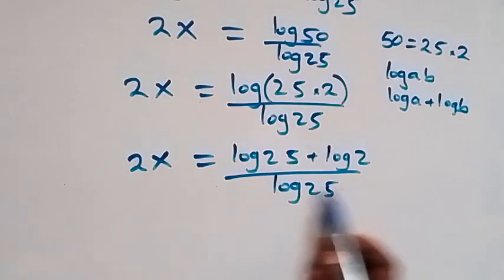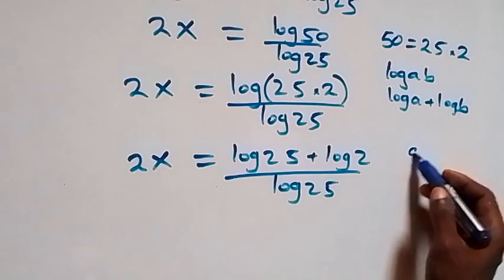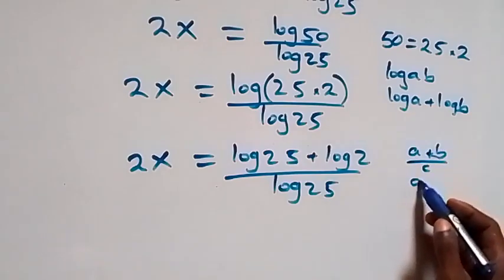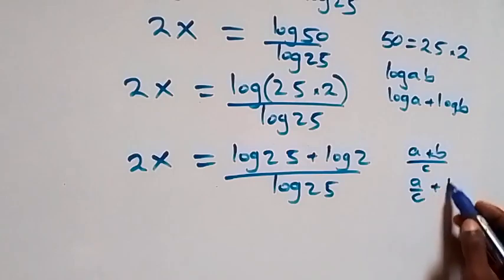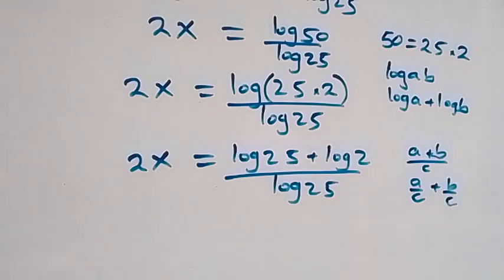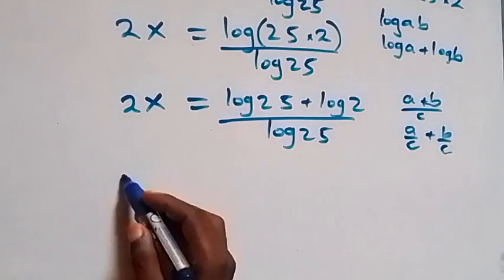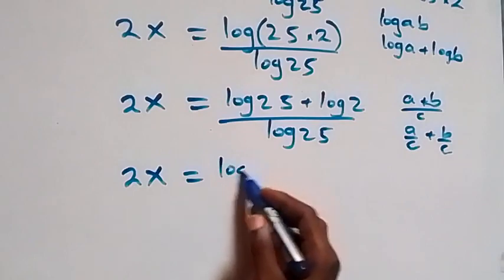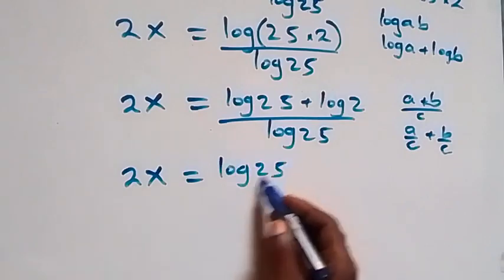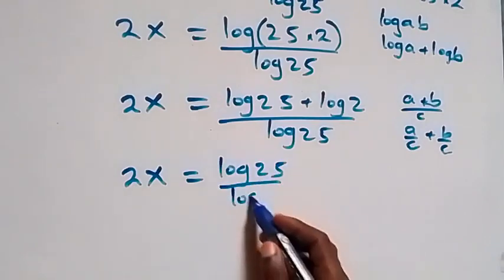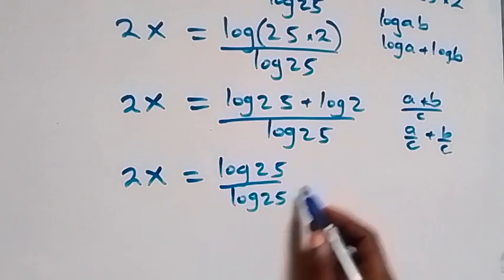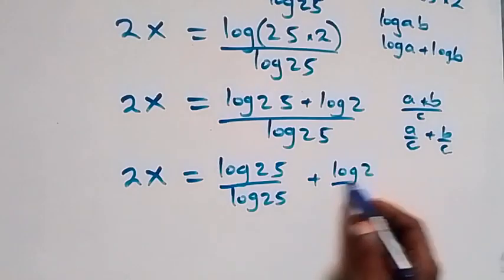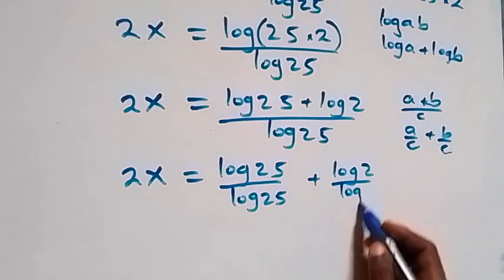The next step we separate this into two fractions. Since (a + b)/c can be written as a/c plus b/c, we have 2x equals to log 25 over log 25 plus log 2 over log 25. Log 25 over log 25 simplifies to 1, giving 2x equals to 1 plus log 2 over log 25.